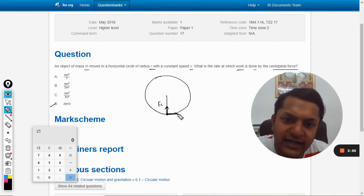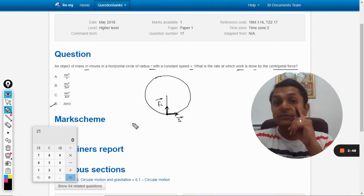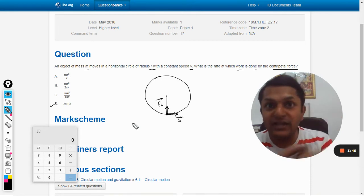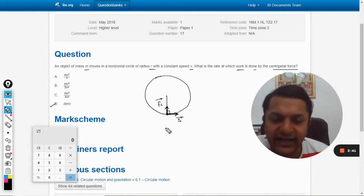This is the displacement vector, this is the force vector. So this becomes a typical case in which the force vector is perpendicular to the displacement vector. This angle is 90 degrees.